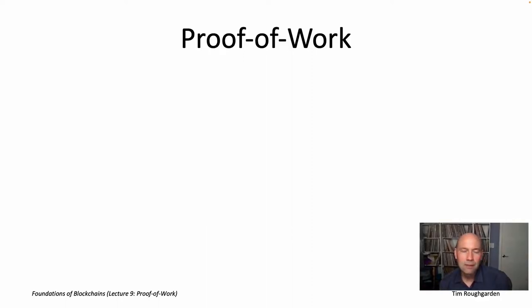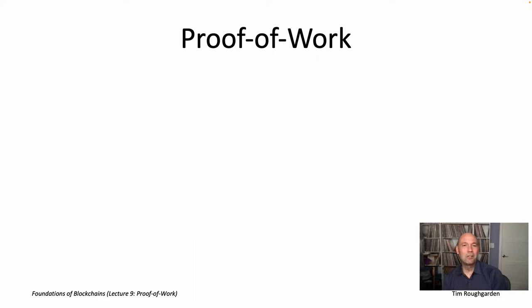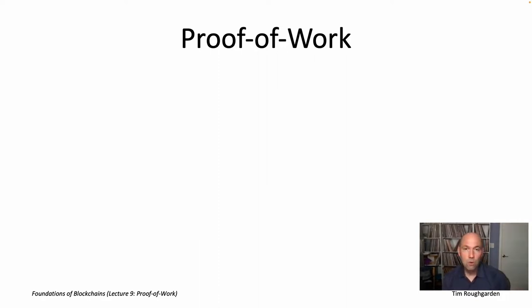Welcome back everyone. Let's start talking about how to take longest chain consensus, which we studied at length in lecture number eight in the permissioned setting. We proved a lot of nice properties about longest chain consensus. Let's see how to use proof of work Sybil resistance to extend longest chain consensus and those nice guarantees to the more demanding, more general permissionless setting.